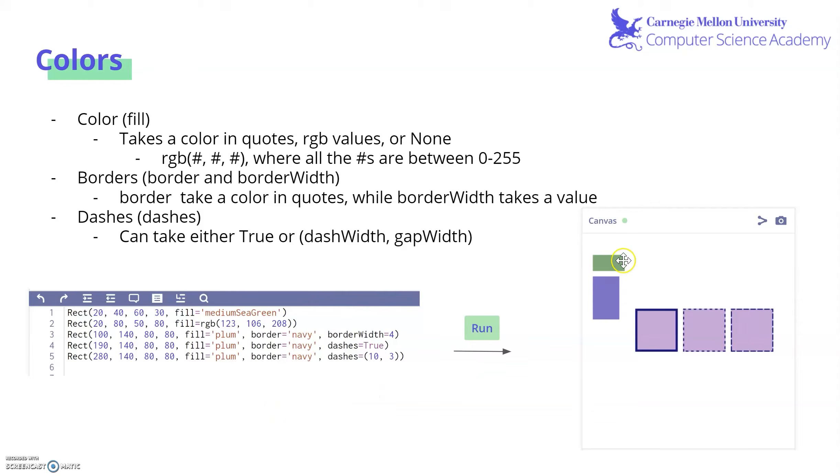Let's take a look at this in action. We have a rectangle up here with a fill of medium sea green, a color in quotes built into the CS Academy graphics package. Then we have a rectangle with an RGB value. It looks kind of purple. And then we have three different squares on the bottom with fill plum, all with border navy, but different border attributes. The first one has a border width of four, then we have dashes just equal to true, and finally, we inputted our own dash width and gap width with some extra long dashes and pretty small gap width as we specified.